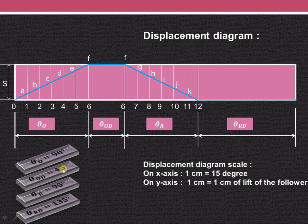Outstroke dwell is 45 degree, so 45 divided by 15 that is 3 cm. And return stroke is 90, so 90 divided by 15 again that is of 6 cm. And we have divided that return stroke also into 6 equal parts, as shown over here that is 6, 7, 8, 9, 10, 11 and 12.